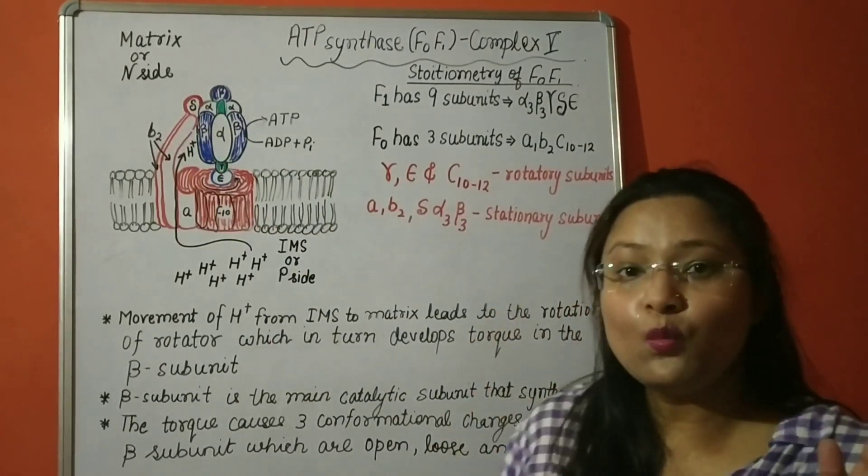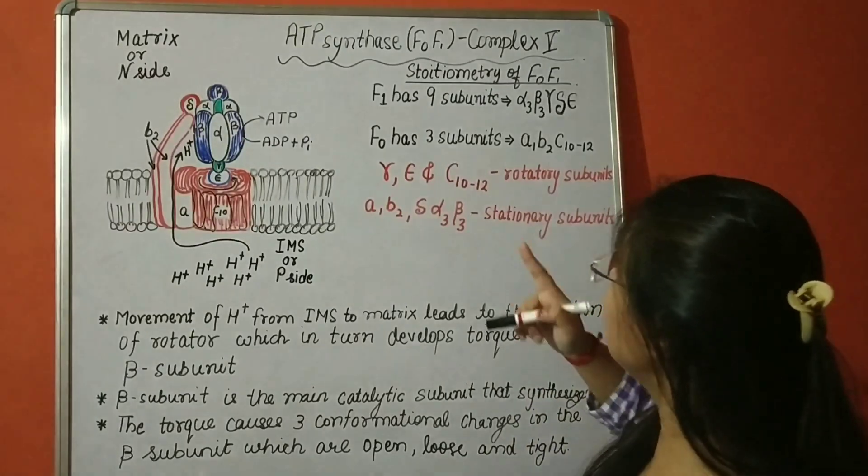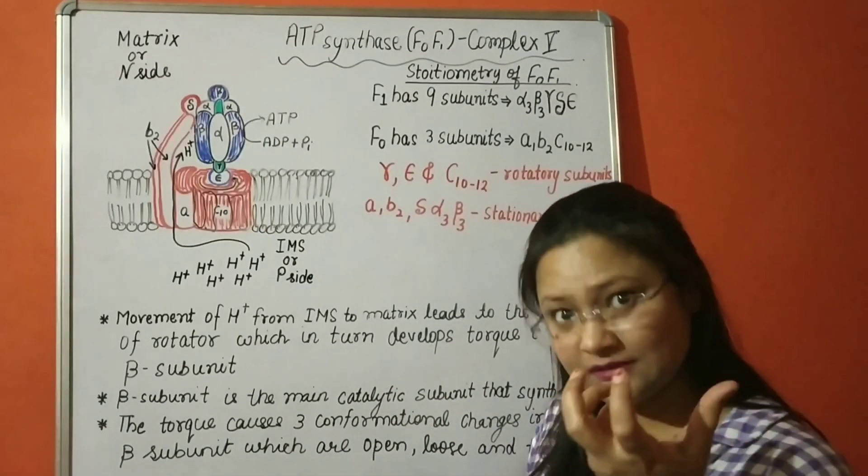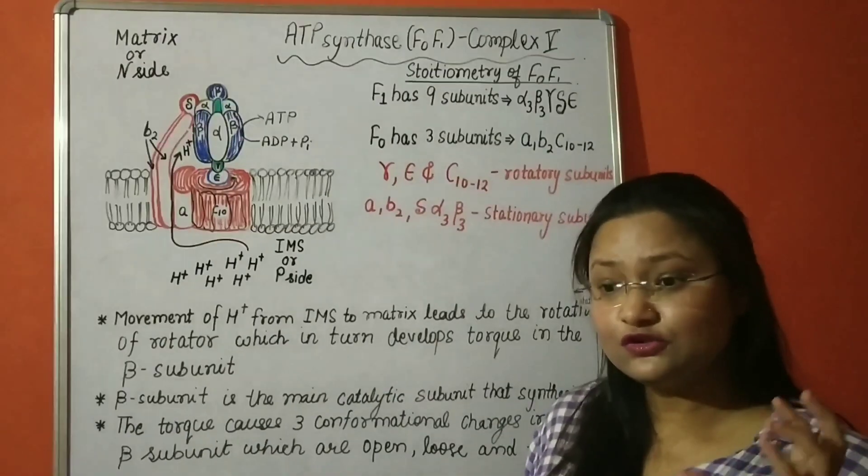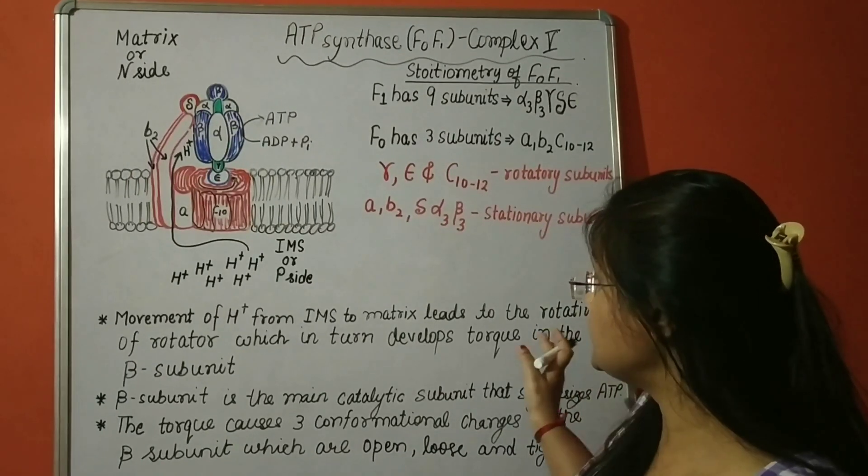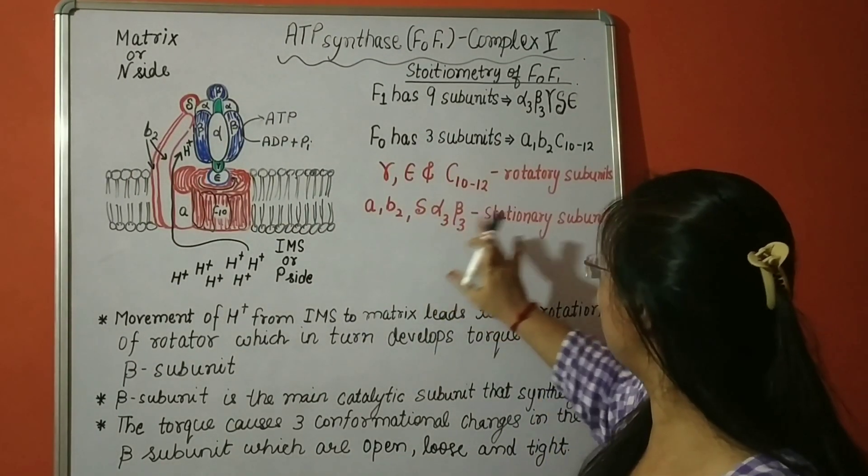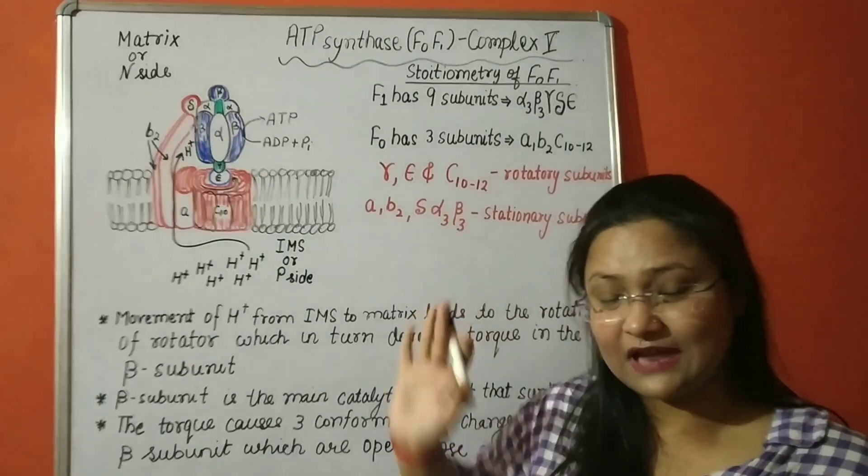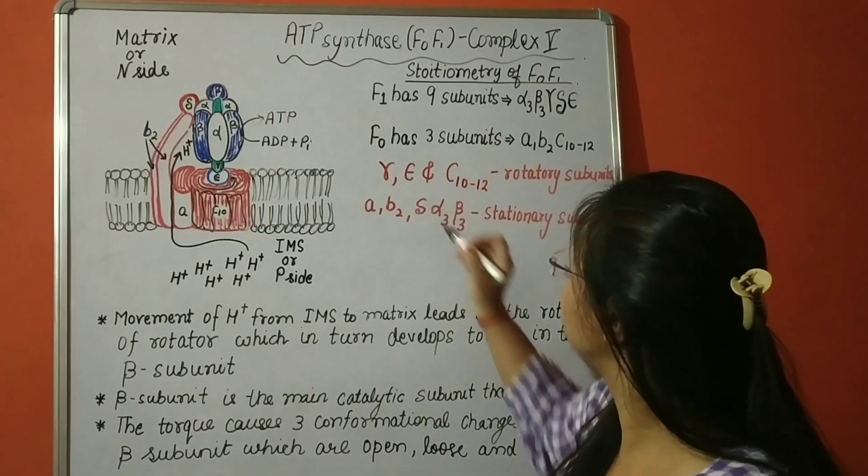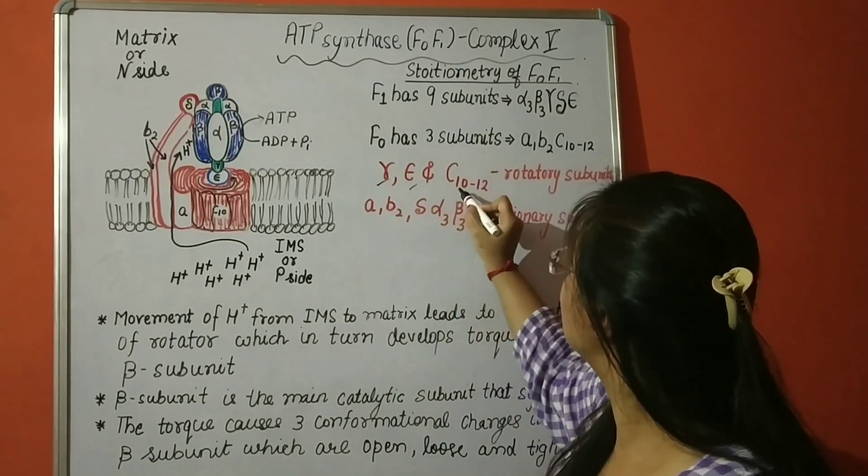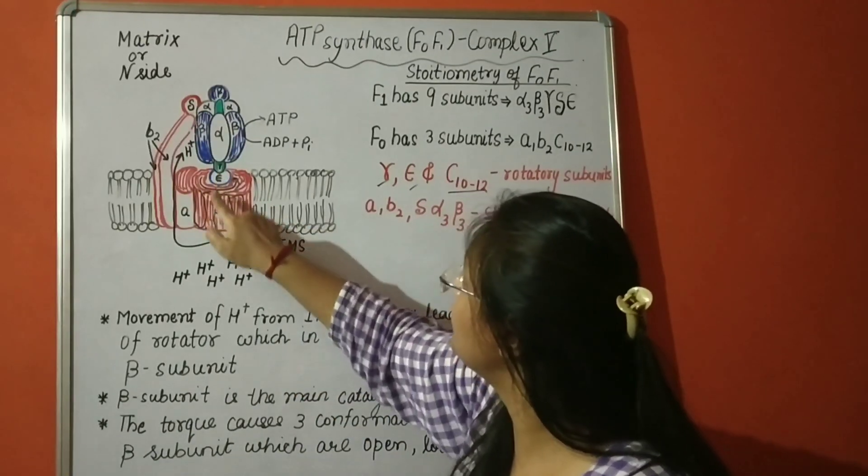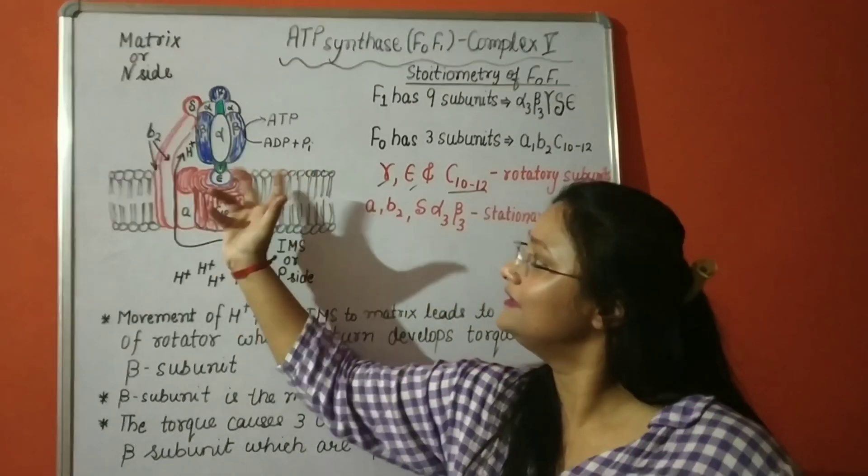Before we discuss about how it leads, let us understand which one of the units of ATP synthase are rotating subunits which can rotate to generate torque, and which one are stationary subunits. So gamma, epsilon, C10 to 12, these rotate like this.